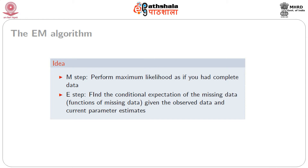In the M step, we perform maximum likelihood as if we had the complete data — assuming we have the complete data, whatever data we have, we perform maximum likelihood. In the E step, we find the conditional expectations of the missing data given the observed data and current parameter estimates. We get the parameter estimates from the M step and then use that to find the conditional expectation of the missing data given the observed data and the estimated values of the parameters. We model the functions of missing data rather than the conditional distribution per se.